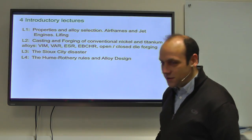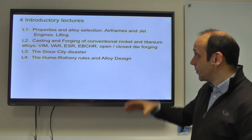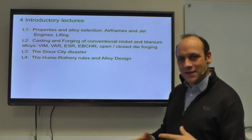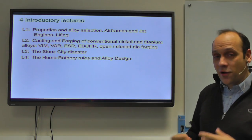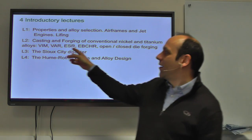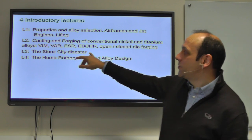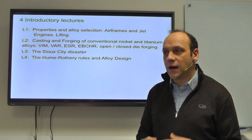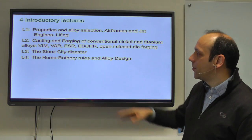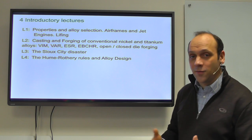In these first four introductory lectures: this lecture introduces the course and covers properties and alloy selection. The second segment covers airframes, jet engines, and lifing — leading into processing, how we cast and forge aerospace materials, specialty metals, and different melting and forging processes. Having thought about how we make them and how defects arise, we'll look at the Sioux City disaster as a case study of how air accident investigations work. The final lecture puts theory of alloying in place via the Hume-Rothery rules and alloy design.